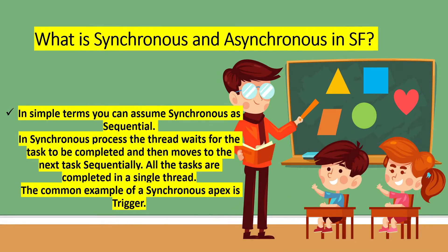What is synchronous and asynchronous in Salesforce? In simple terms, you can assume synchronous as sequential. In a synchronous process, the thread waits for the task to be completed, then moves to the next sequence. All tasks are completed in a single thread. A common example of a synchronous operation is a trigger.